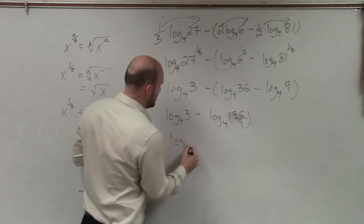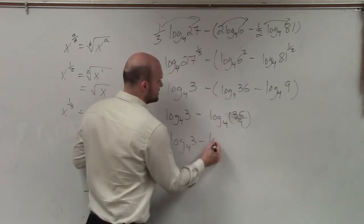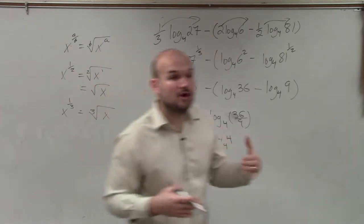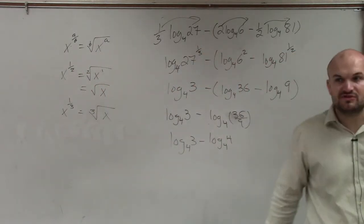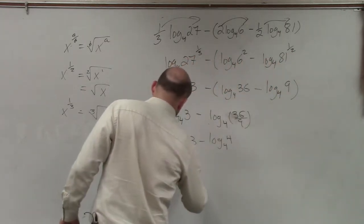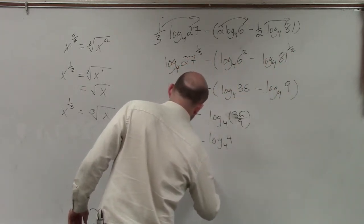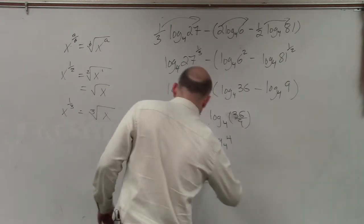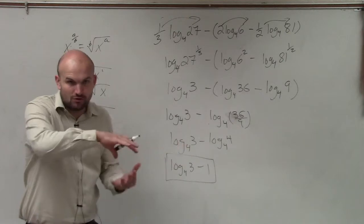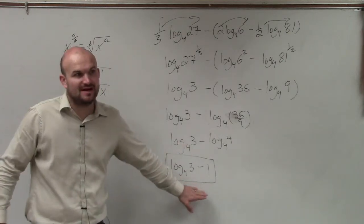Therefore, this becomes log base 4 of 3 minus log base 4 of 4. Going into our understanding of logarithms, 4 raised to what power gives you 4? 1. So I have log base 4 of 3 minus 1. And since that 1 is not a logarithm, you can't do the quotient property again. That is your final answer.